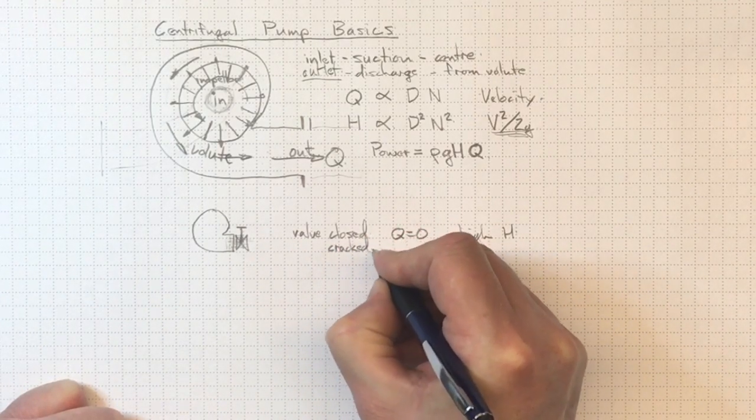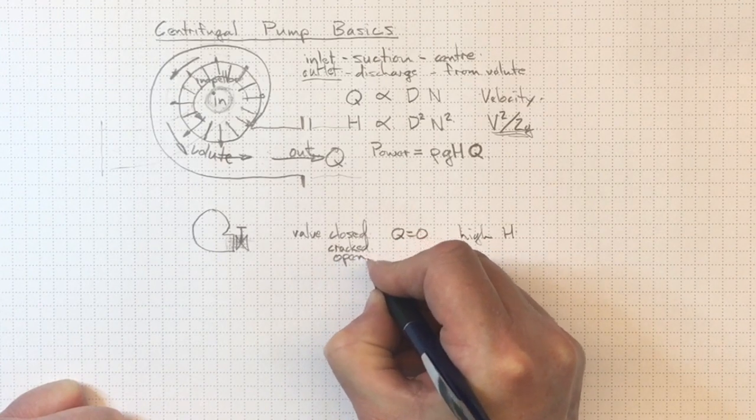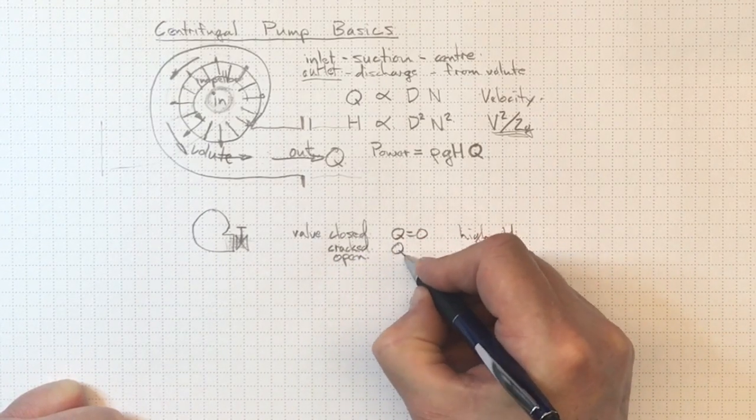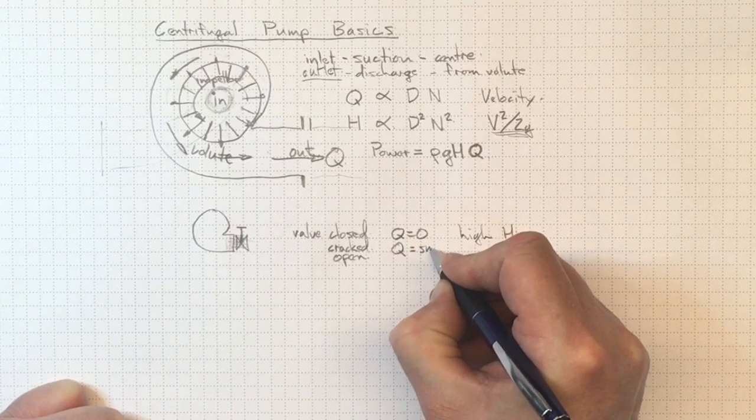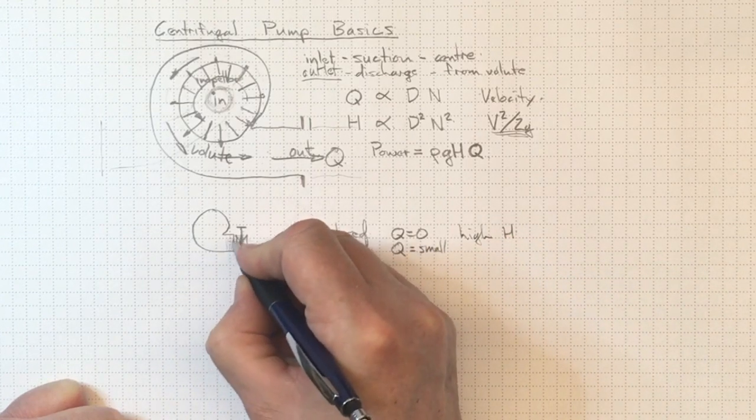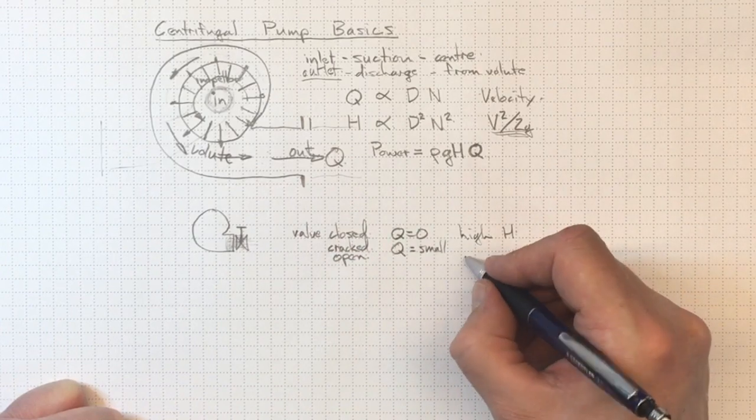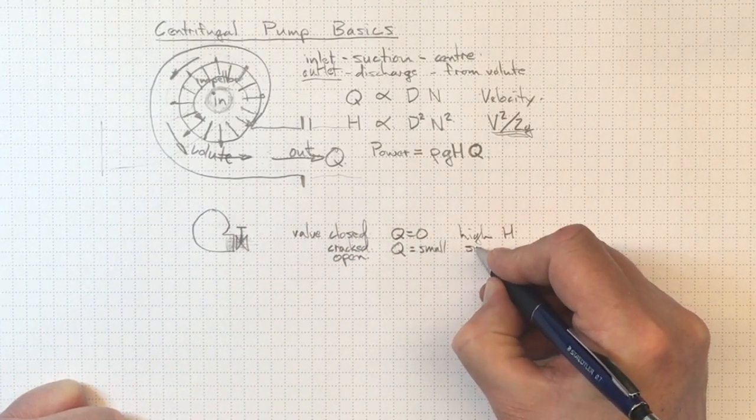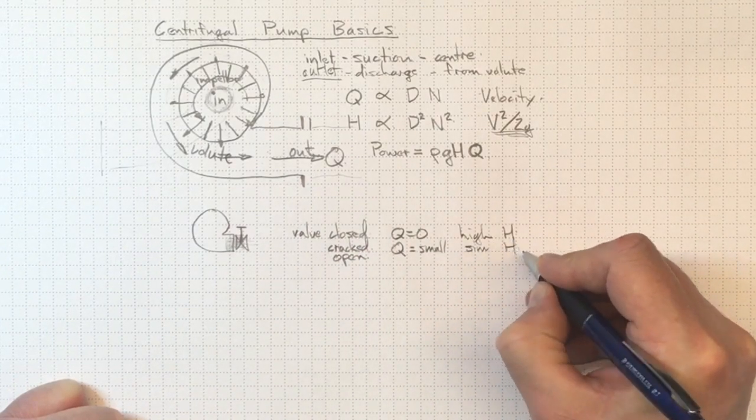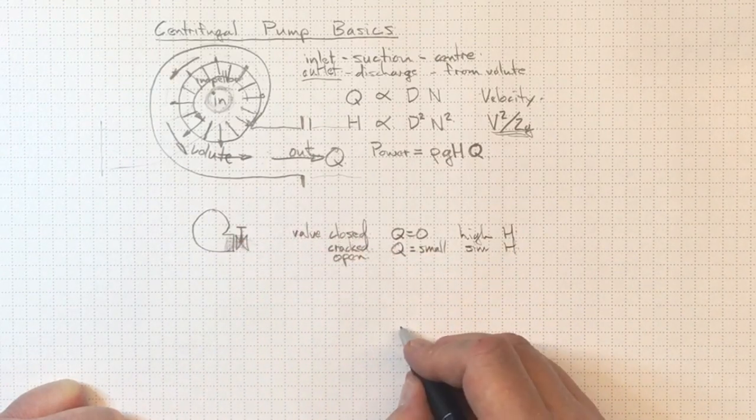If we crack the valve open a little bit, so just opened a little bit, then we'll get a small flow going through. We'll still have a high pressure here, but we're letting a little bit of flow come out. And we'll have a similar H value, the pressure is still really high here.